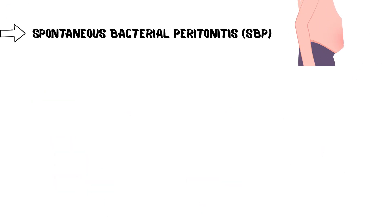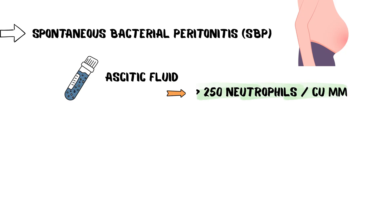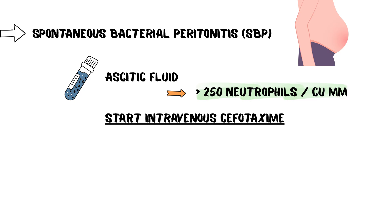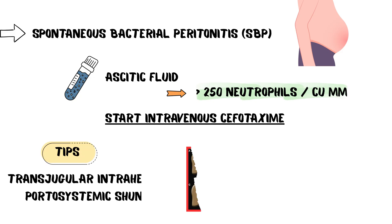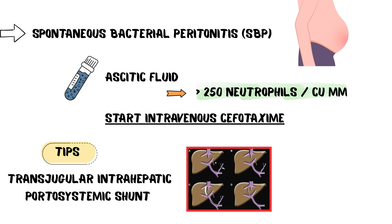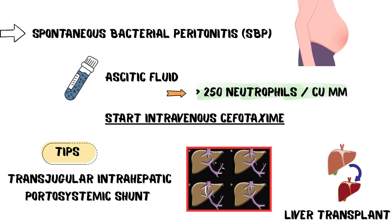Spontaneous bacterial peritonitis is diagnosed when ascitic fluid has more than 250 neutrophils per cubic millimeter. Send the fluid for culture, then start intravenous cefotaxime. Refractory cases may require TIPS — the transjugular intrahepatic portosystemic shunt — to decompress the portal system. Liver transplantation is definitive in end-stage disease.